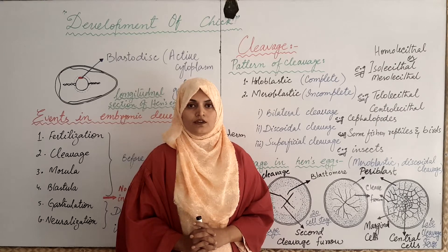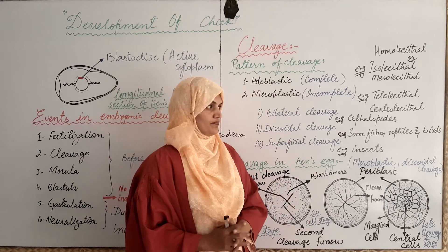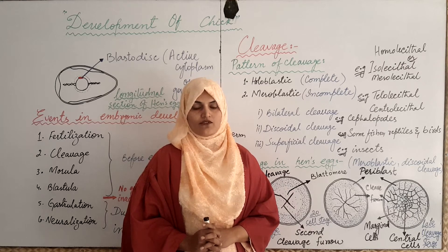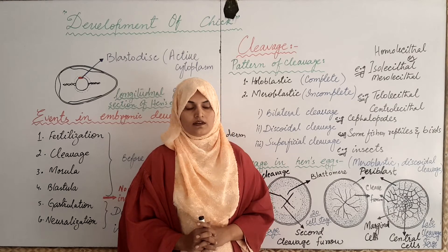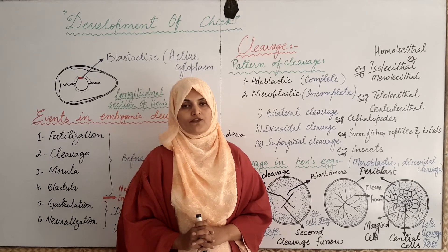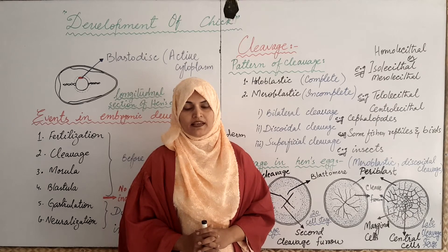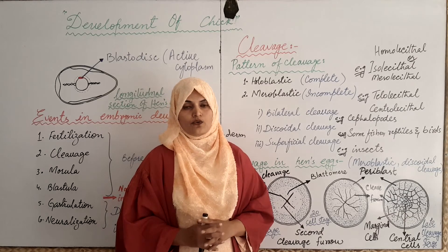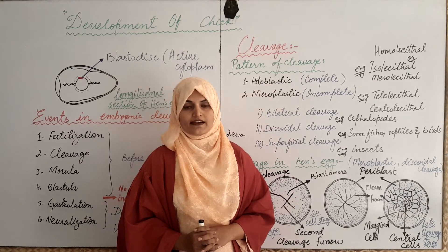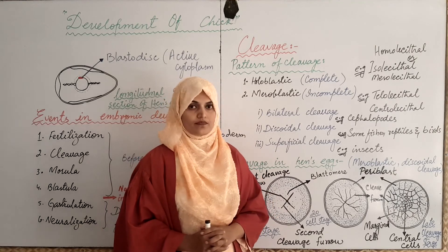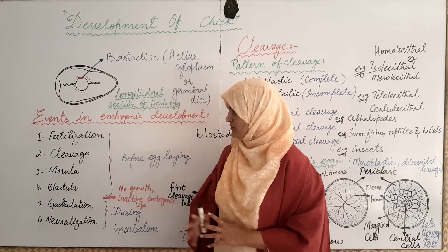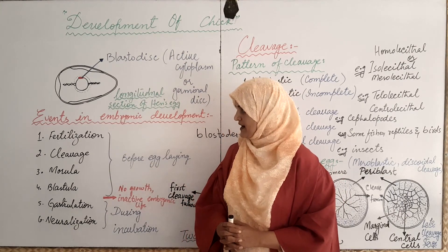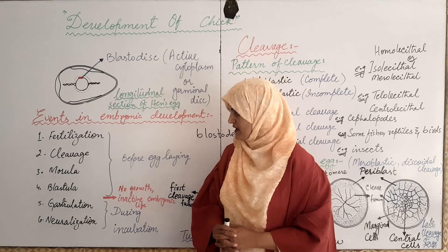I hope you got the idea about how cleavage takes place in the hen. The outcome of the cleavage is termed as cytoplasmic localization, and it determines the developmental fate of cell descendants — meaning the cell that is later on formed determines what organ or structure will be formed, and this is localized at that stage. In the next lecture, we will study the later events of the development of chick: morula, blastoderm, gastrulation and neurulation.